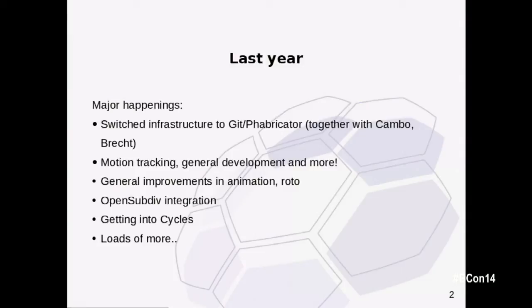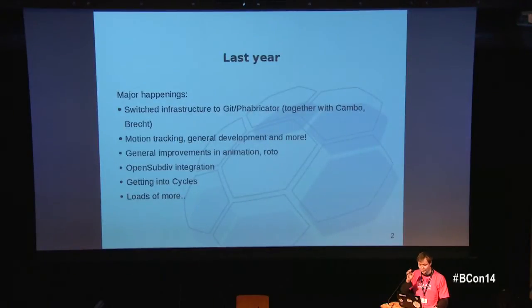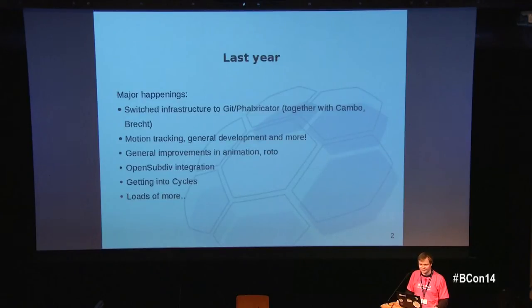Let's talk about what was happening last year — and we count years from the Blender Conference, apparently. Since the previous Blender Conference, we've been working on infrastructure stuff which is not so visible for everyone, but which took quite a reasonable amount of effort from me, Campbell, and Brecht. We switched basically from SVN to Git. I'm still not sure if everyone is happy with this, but for us it works pretty good. There were also some motion tracking improvements, some improvements in animation, and one of the biggest projects was OpenSubdiv, which will be covered later. I've tried to pick up Cycles, and it's not the easiest thing in the world, so I'm still trying to implement something significant there. There were lots of smaller issues and smaller stuff done.